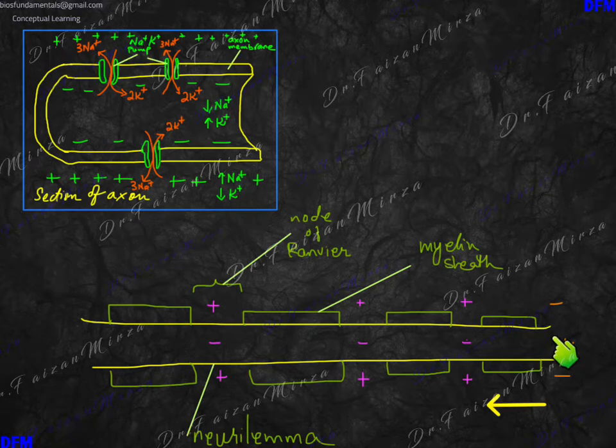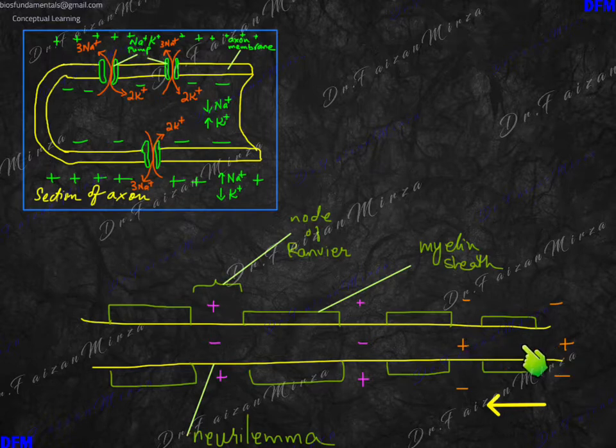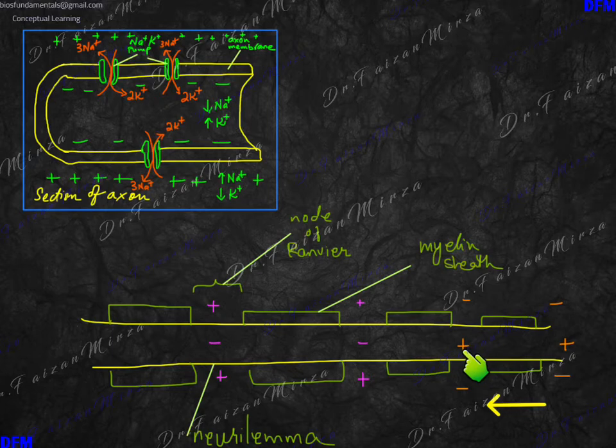So the only region through which repolarization or depolarization and any exchange of ions can occur is all across just the nodes of Ranvier. This is why this impulse is transmitted in a much quicker manner because just the nodes of Ranvier have to depolarize. So you can see that this is impulse coming here. So this node of Ranvier got depolarized. Initially this was at negative potential but then sodium ions entered so this became positive.